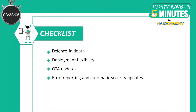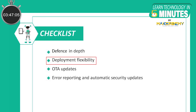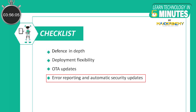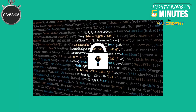Azure Sphere has the following features. Azure uses the defense-in-depth approach for its security, which provides protection and guards devices against threats. It also offers deployment flexibility for securing existing IoT equipment and protecting new upcoming IoT products, as well as over-the-air updates, error reporting, and automatic security updates. It is clear that providing high security is the primary objective of Azure Sphere.